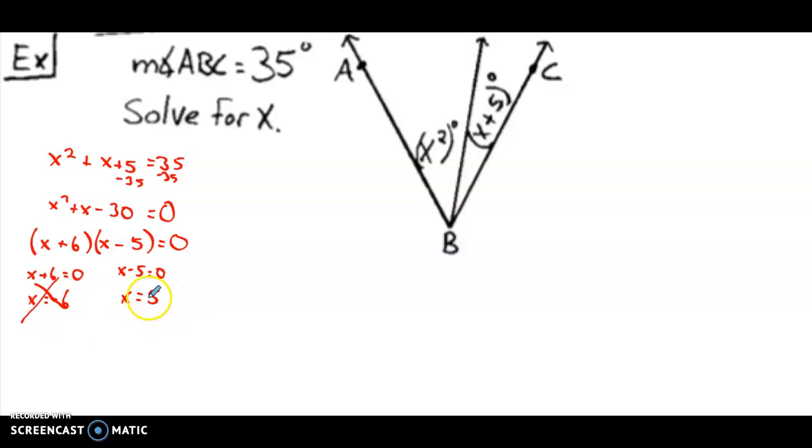x equals 5. 5 squared is 25, 5 plus 5 is 10. 25 degrees plus 10 degrees is 35 degrees. So this is our one and only good answer.